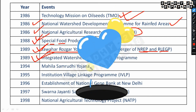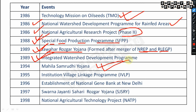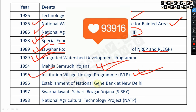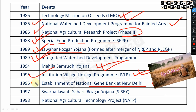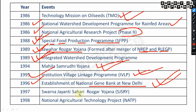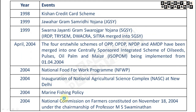The Mahila Samridhi Yojana started in 1994. The Institution Village Linkage Program (IVLP) started in 1995 — very important. In 1996, the National Gene Bank was established at New Delhi. In 1997, the Swarna Jayanti Shahari Rojgar Yojana was started — also general awareness. The National Agricultural Technology Project (NATP) was started in 1998.